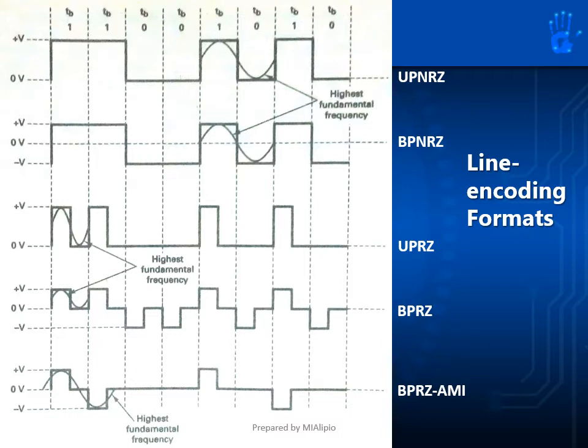Unipolar return to zero, or UPRZ, follows the logic behind UPNRZ. The difference is that at the middle of a bit, the amplitude must fall to zero volts. Similarly, bipolar return to zero, or BPRZ, follows the logic behind BPNRZ. The difference is that at the middle of a bit, the amplitude must also fall to zero volts.